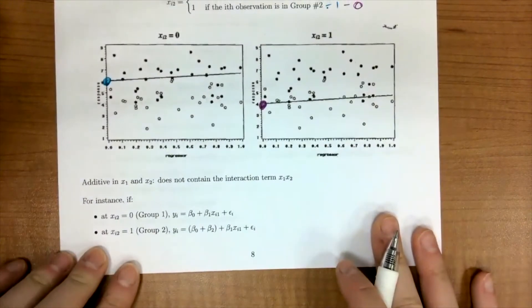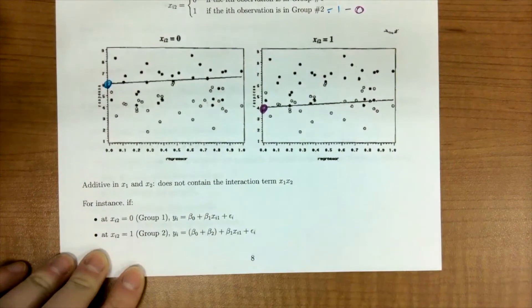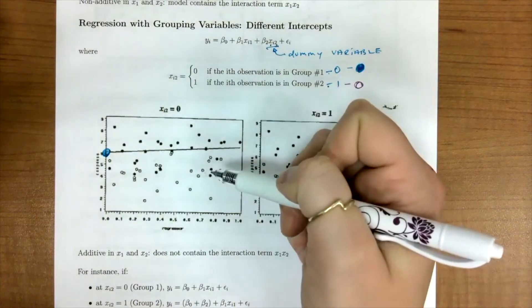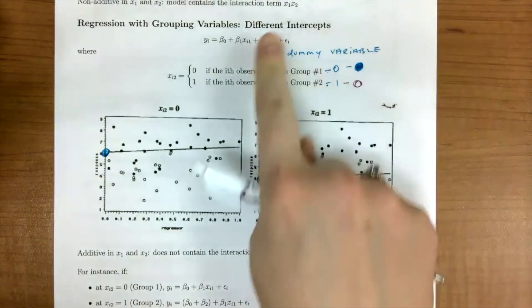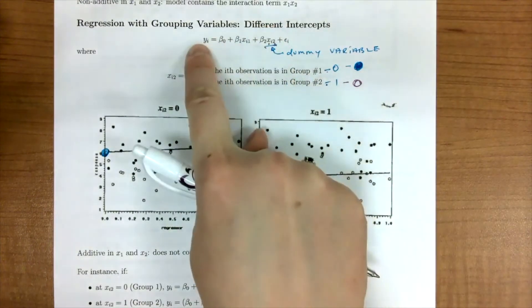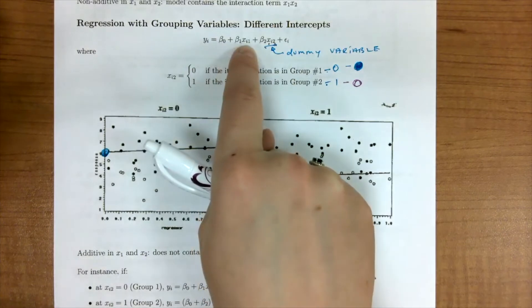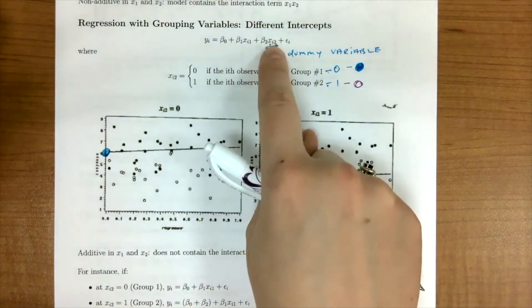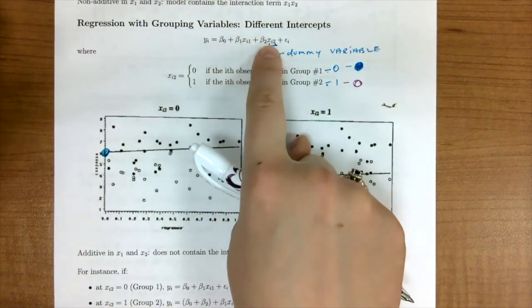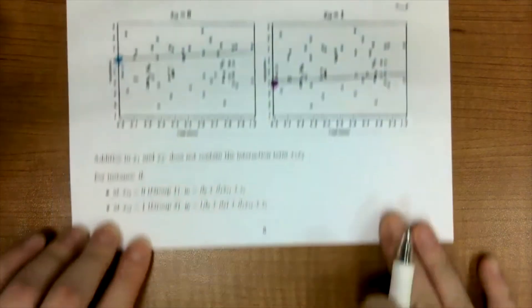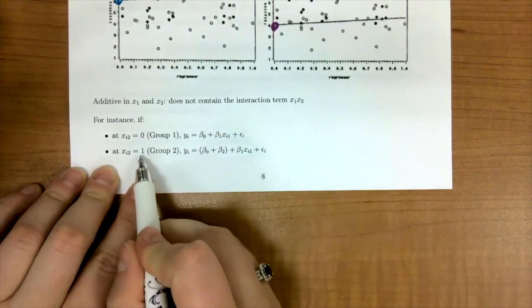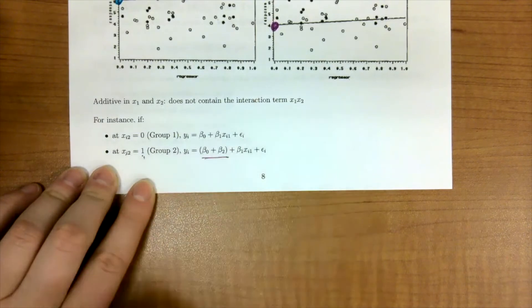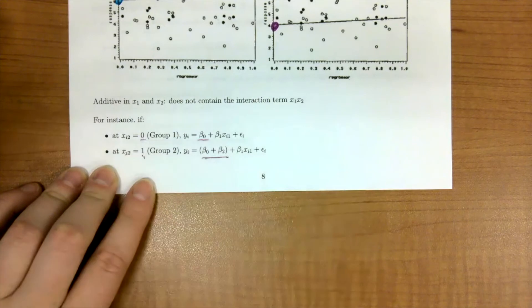So to put this a little bit more concrete, if xi2 is 0, this is going to get cancelled out, and we're going to be left with beta 0, beta 1, xi1 and epsilon. But if this x is 1, we'd be left with beta 0 plus beta 2 for our intercept. And that's what this right here is demonstrating, is that if xi2 is 1, we're going to have this as our intercept. But if we're at 0, then we're going to have this intercept.